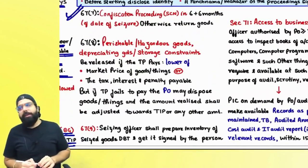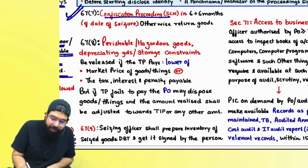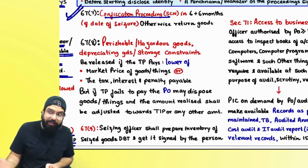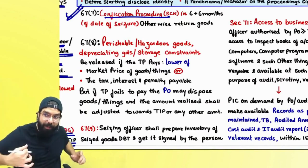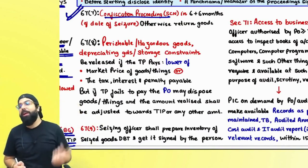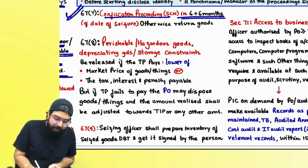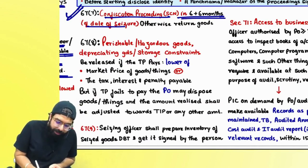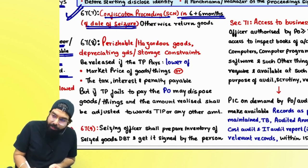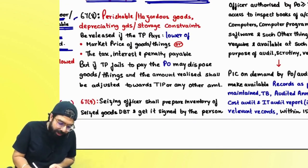Section 67(7) says: seizure is taking possession. Now if they want to take over ownership also, for confiscation they will issue a show cause notice for confiscation within 6 months plus 6 months of the date of seizure. Otherwise, goods shall be returned to you.